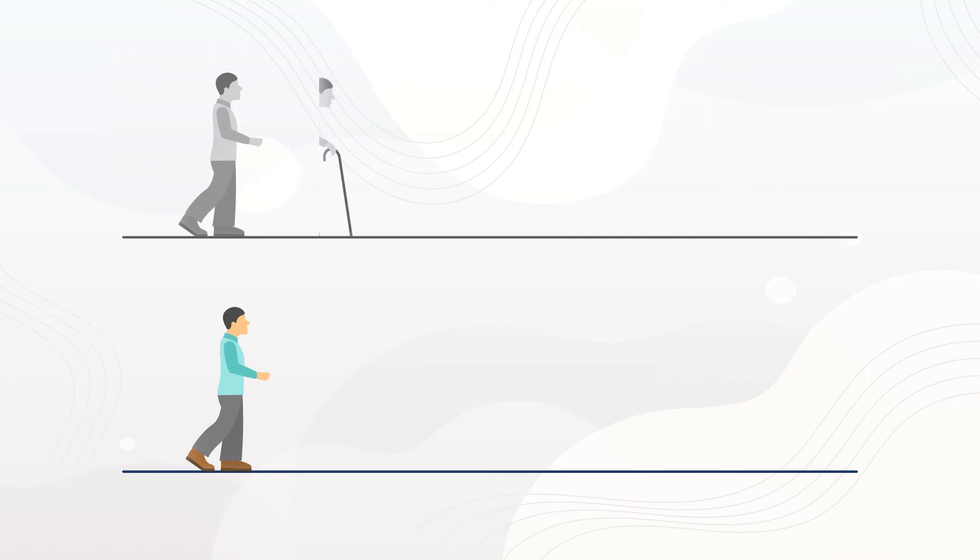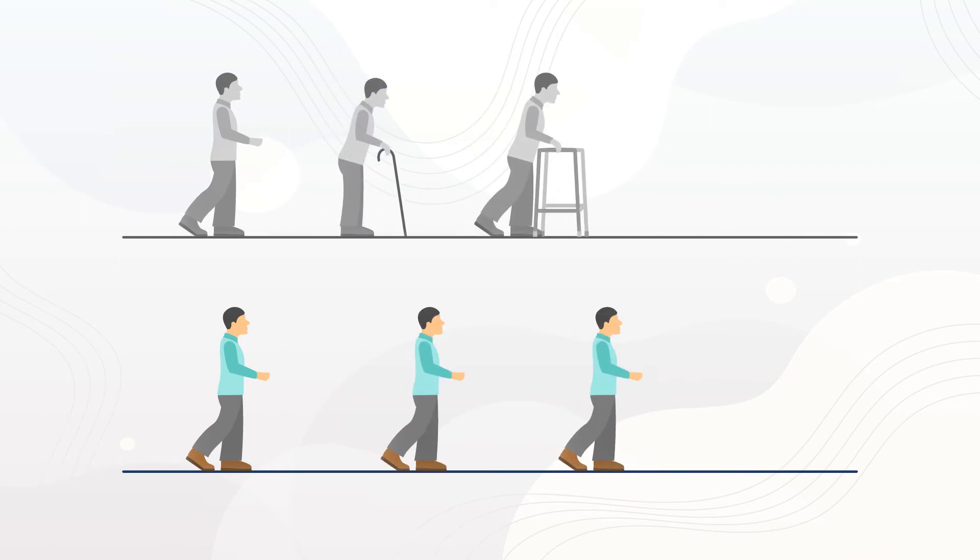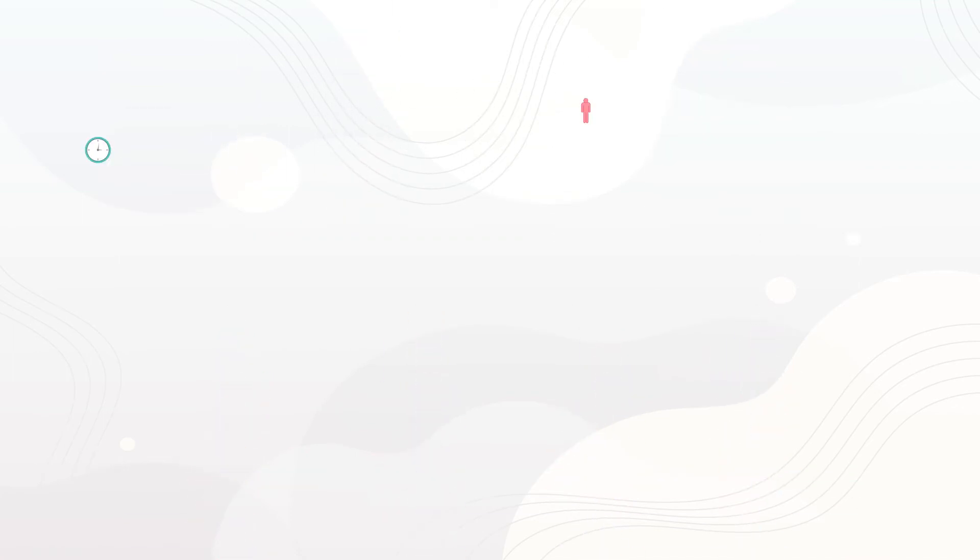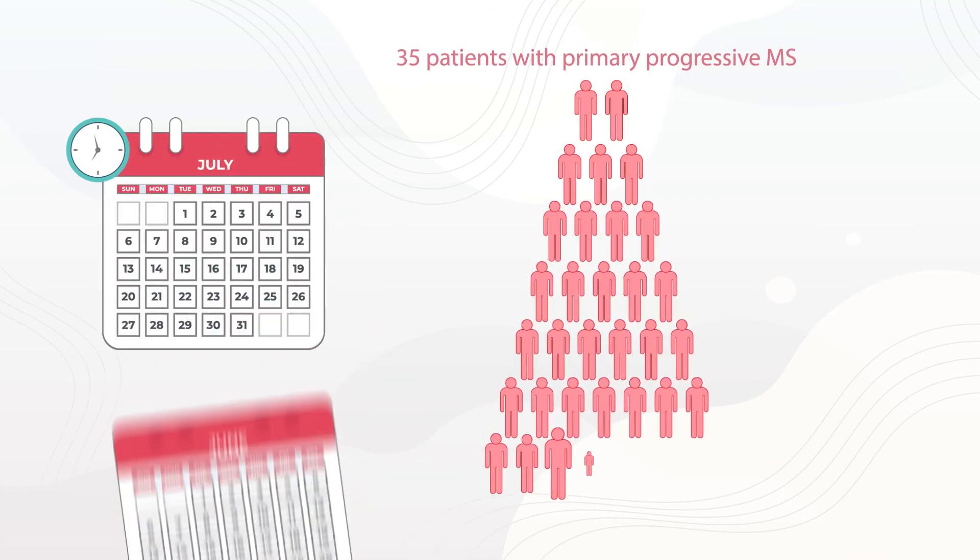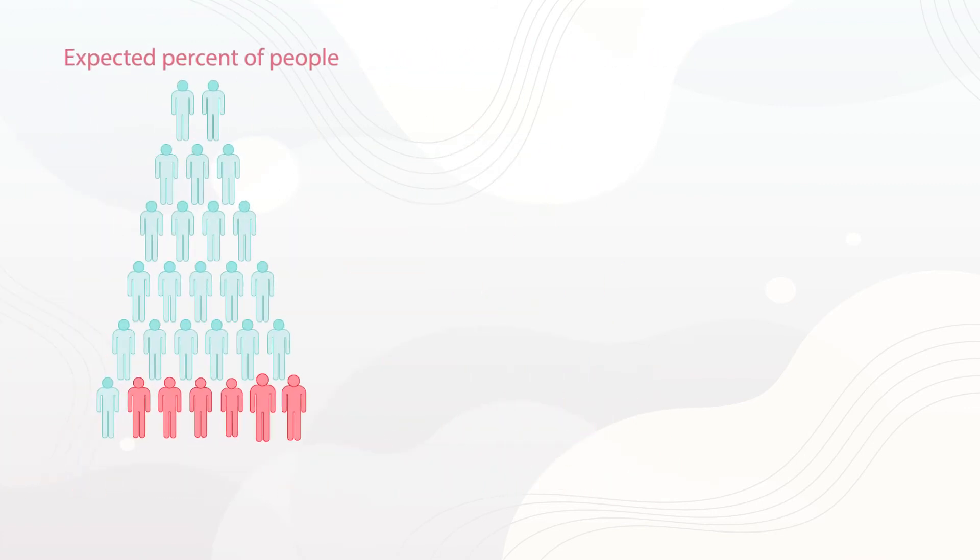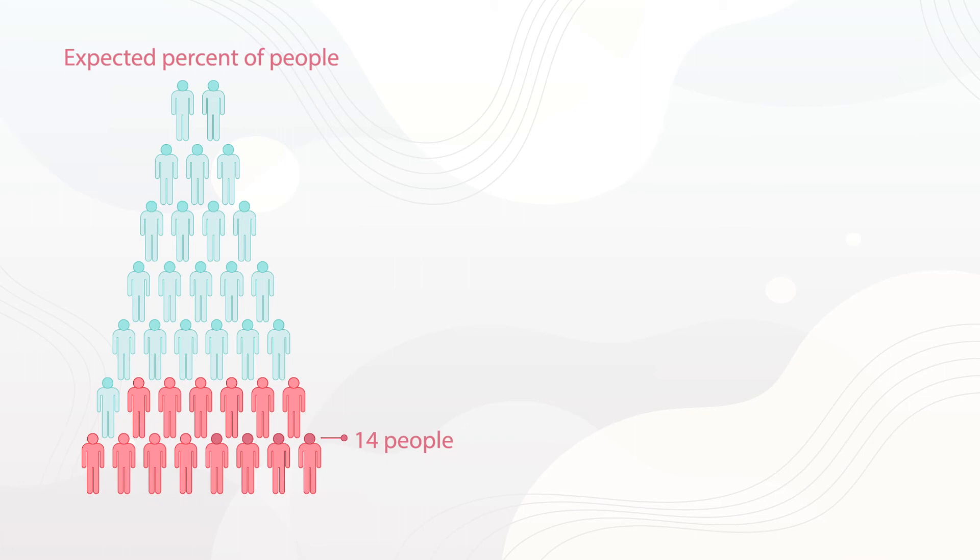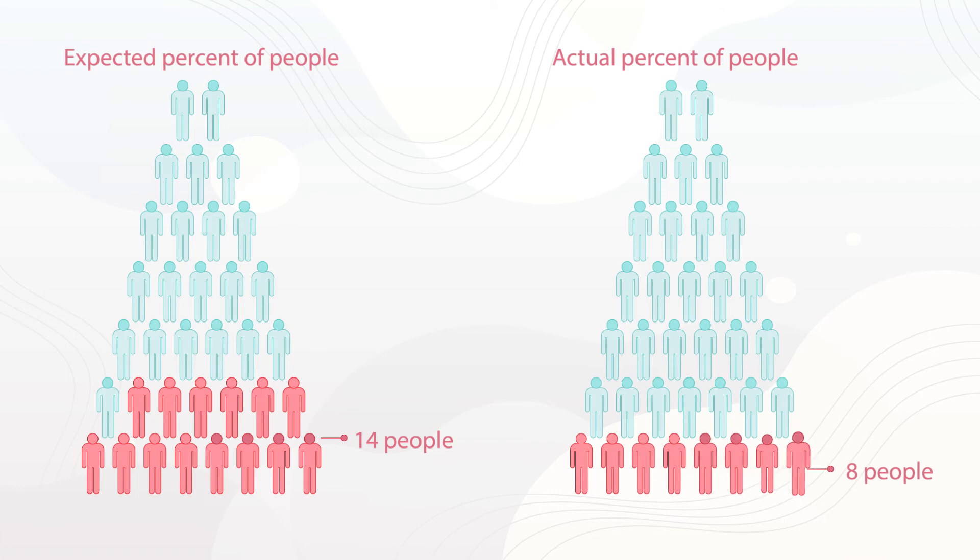35 people with PPMS were given hydroxychloroquine for 18 months. The researchers expected 40% or 14 people to significantly worsen in their walking function, but at the end of the trial, only eight participants had worsened.